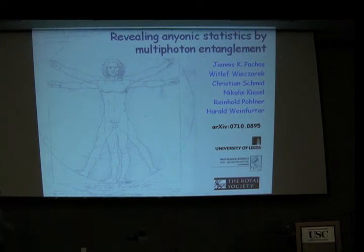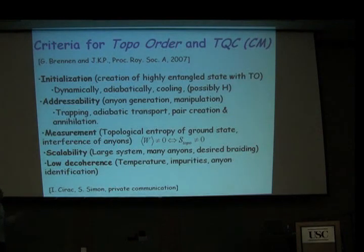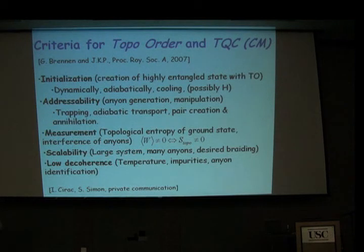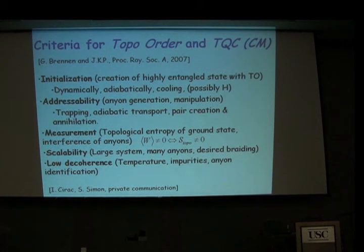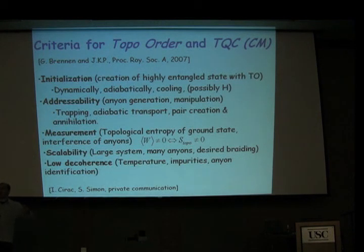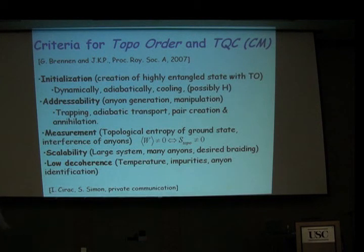Before moving into the particular model, let me give a few criteria, very much in line with DiVincenzo's criteria, when you try to implement systems which have topological order or are useful for topological quantum computation — those are slightly different things. For example, you need initialization, and your initial state here is a highly entangled state. This entanglement is actually what brings out the non-trivial statistics of your particles. Let me emphasize that this is not a property of your topological model — it's a property of the physical model that simulates your topological model.